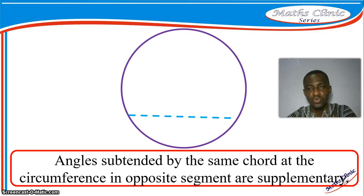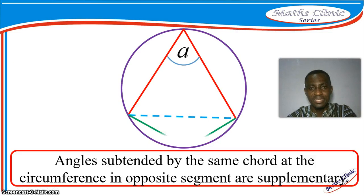We have what you call the major segment and then the minor segment. Now, when we subtend an angle to one side of the segment at the circumference, and then we do the same thing at the opposite side of the segment, what we are saying is that these two angles add up to 180 degrees.